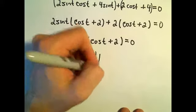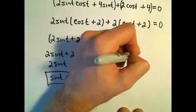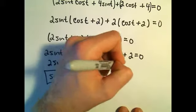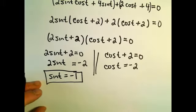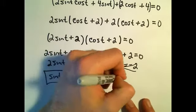Our second equation, if we take cosine of t plus 2 and set that equal to 0, when we subtract the 2, we'll get cosine of t equals negative 2. This is outside of the range of cosine. So this equation simply has no solutions.